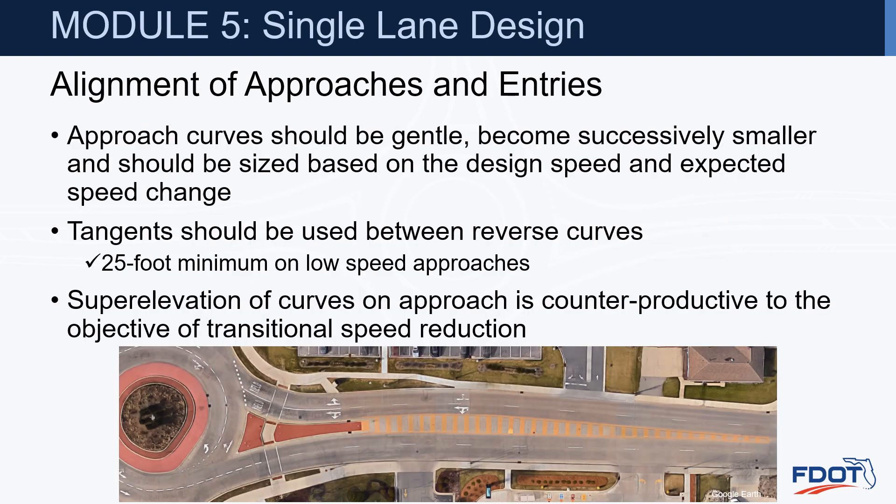For alignment of approaches and entries, approach curves should be gentle, become successively smaller, and should be sized based on the design speed and expected speed change. Tangents should be provided between reverse curves, with a 25-foot minimum on low-speed approaches. Superelevation of curves on approach is counterproductive to the objective of transitional speed reduction — our goal is to slow people down, not make it easier to enter the roundabout at a higher speed.